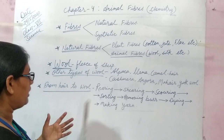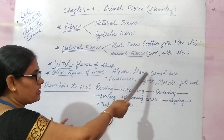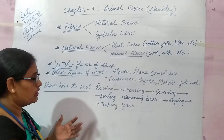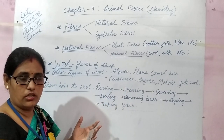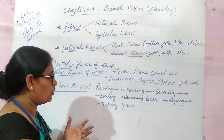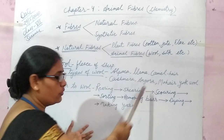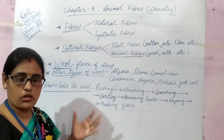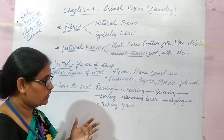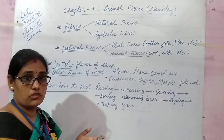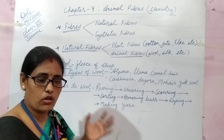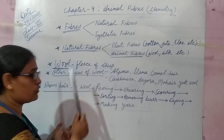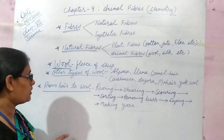Some other animals like alpacas, llamas, and camels also provide good varieties of wool. Kashmiri wool is obtained from the Kashmiri goat. Angora is from the Angora rabbit. Mohair is obtained from the Angora goat. Yak wool is very famous in Tibet and Ladakh. These are all good varieties of wool, but the main source of obtaining wool is the fleece of sheep.